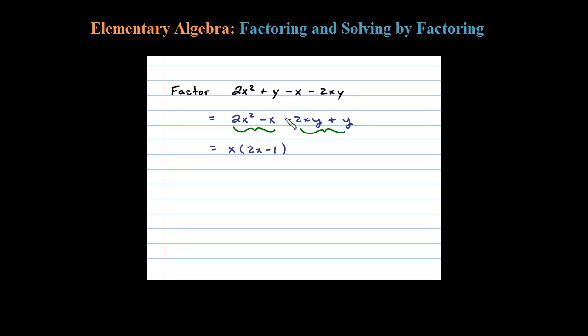Now for the second two terms, it looks like I have a y as a GCF, but let's factor out a negative y. Factoring out a negative y, we're left with 2x minus 1. Certainly double check that.